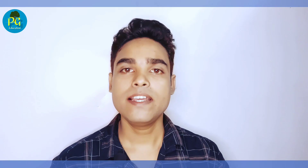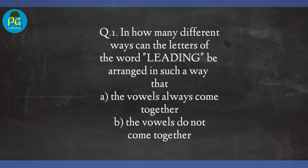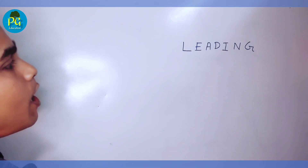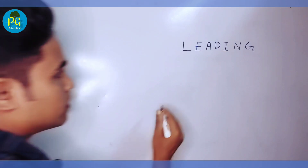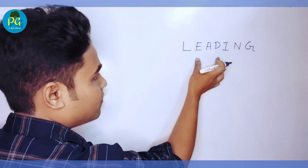Let us understand clearly with some more examples. Question number 1: In how many different ways can the letters of the word LEADING be arranged such that A) the vowels always come together, and B) the vowels do not come together. The word is LEADING. How many vowels are there? There are 3 vowels: E, A, and I. So let us separate these vowels.